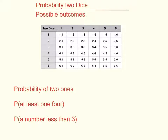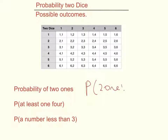Another way of showing what can happen with two events is to use a table. In this table, we're rolling two dice. Along the top I've got one die: one, two, three, four, five, six. Down the left I've got the other die: one, two, three, four, five, six. I can get two ones, a one and a two, a one and a three, and so on. We can use this to work out probabilities of getting certain outcomes. The probability of getting two ones is one out of 36 — there is only one result with two ones, and there are six times six equals 36 total outcomes. So it's one favorable outcome out of 36 possible outcomes.